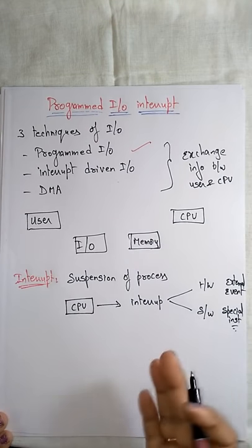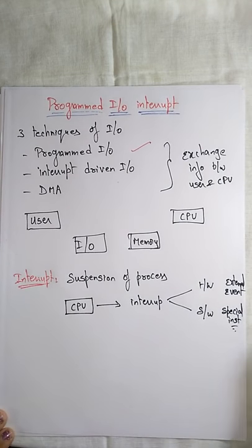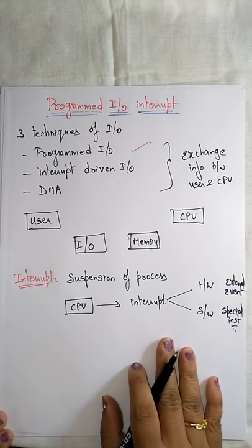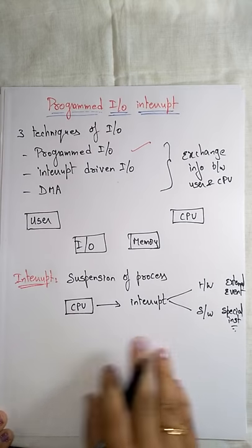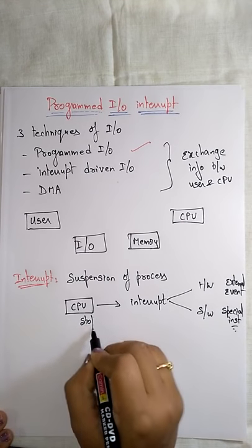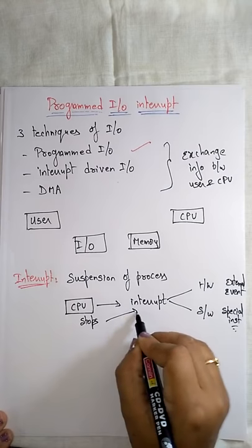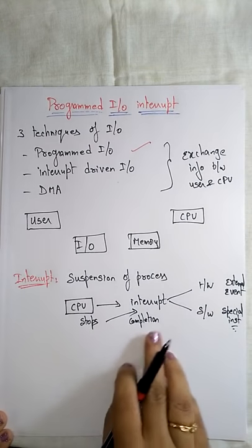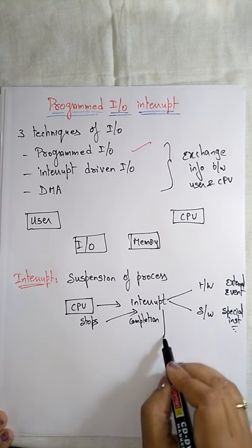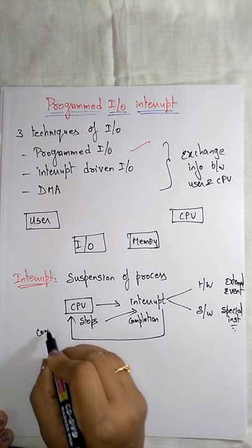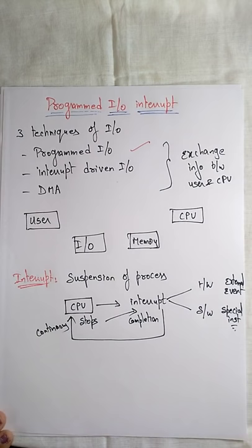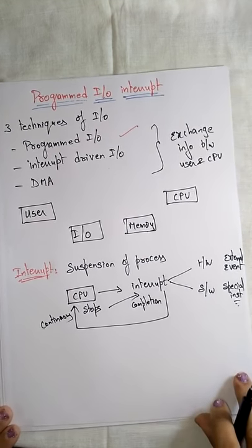Interrupts may come from external devices or internal devices. Whenever the interrupt occurs, the CPU stops the instruction it is currently executing, takes the interrupt request, and after the completion of the interrupt request, the CPU continues with its work. That is what an interrupt is.